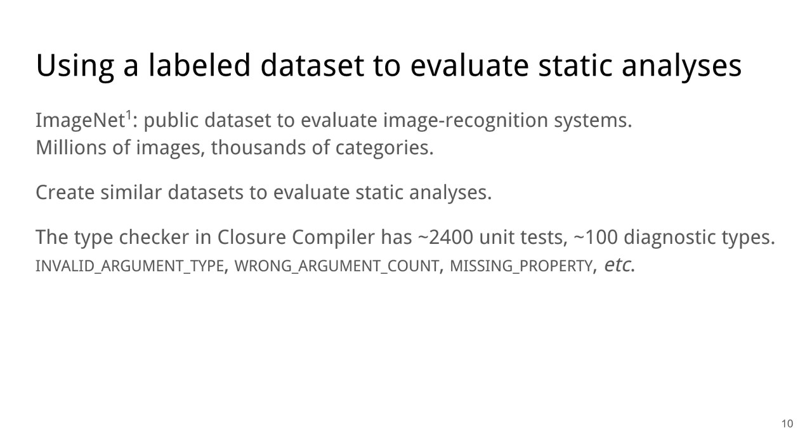And all the warnings that we emit can be categorized into about 100 diagnostic types. For example, we can have the invalid argument type, meaning that you're passing an argument of the wrong type to a function. Or we have wrong argument count, meaning that you're calling a function with too few or too many arguments. And missing property, meaning that you are accessing a property that doesn't exist on an object, and so forth.